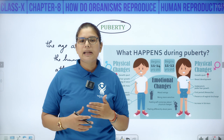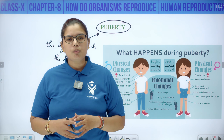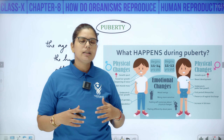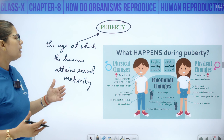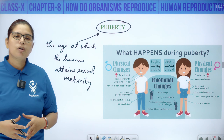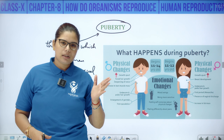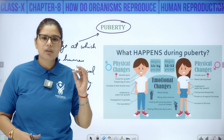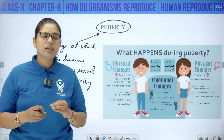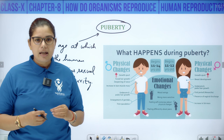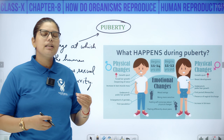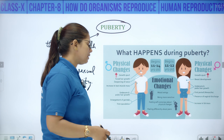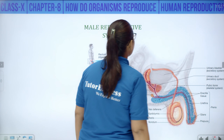All these physical changes occur under the influence of hormones. These hormones are causing these changes because at that time the body is preparing for sexual reproduction. Before puberty, the organism cannot sexually reproduce. After puberty hits, sexual maturity arises.